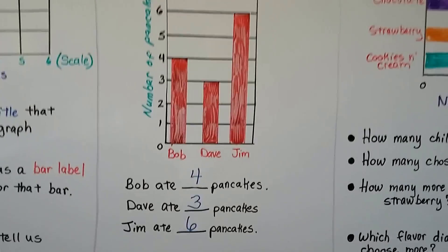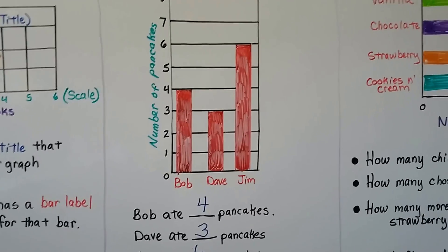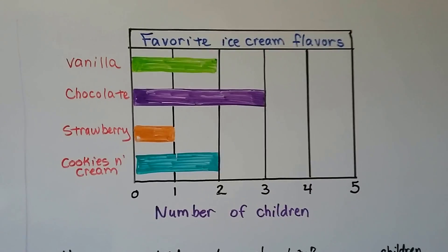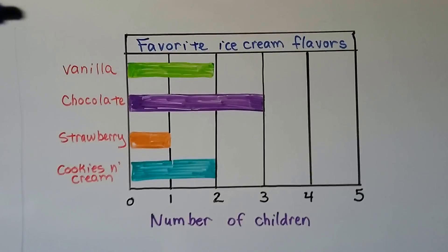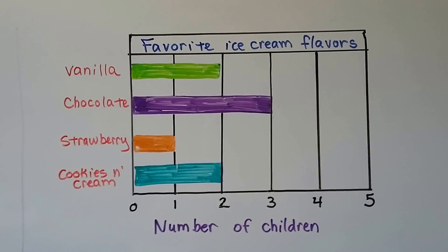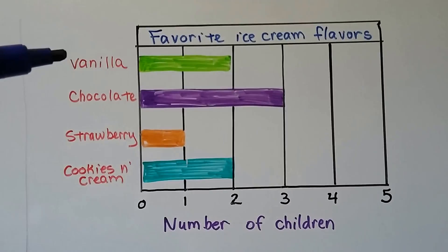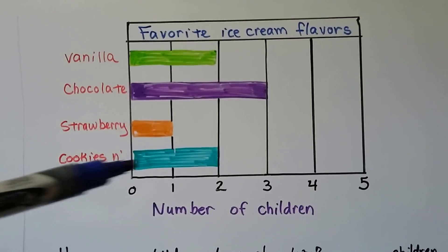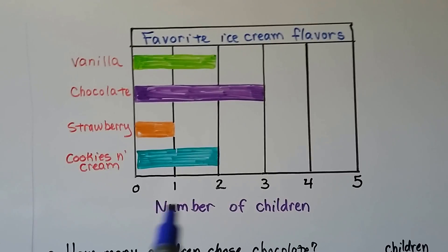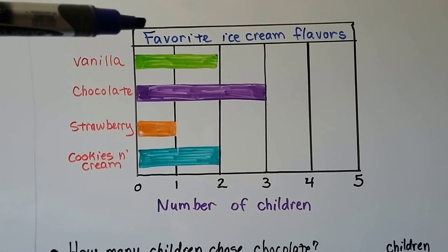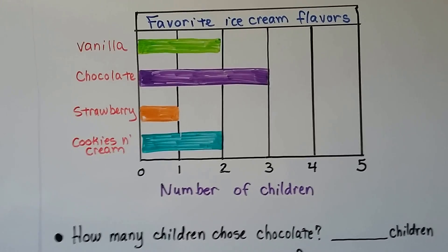It's very easy to see who ate the least and the most by just looking at the bar. This is the same information we used for the picture graphs. This is Favorite Ice Cream Flavors. We've got vanilla, chocolate, strawberry, and cookies and cream. These are our bar labels. Our scale is from zero to five, and it's telling us the number of children. So the title is Favorite Ice Cream Flavors. These are the bar labels. This is the scale, and that's the scale label.